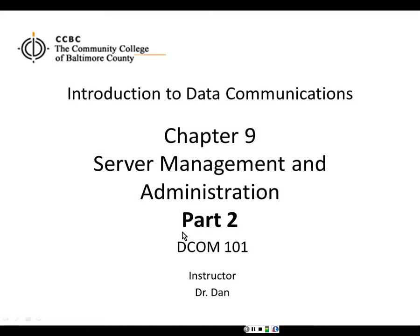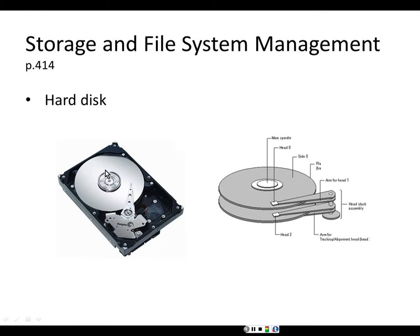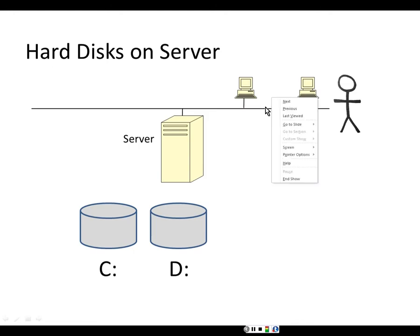We are on part two of chapter nine. In this section we will be discussing storage and file system management on page 414. A hard disk is a mechanical device used for saving data. There is a hard disk in the workstations, but typically users save their data to the hard disks which are located on the server.